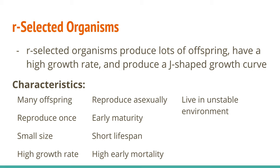There's a tendency for R-selected organisms to live in unstable environments, because reproductively it makes sense: produce a lot of offspring and don't put a lot of effort into them if your environment is unstable, because they might die very easily and all that energy would be wasted. Just make a lot of them and hope for the best.